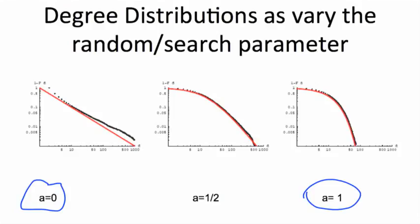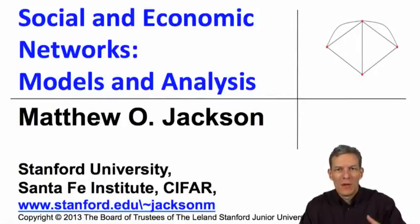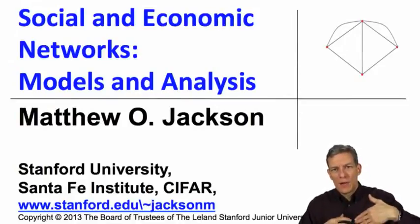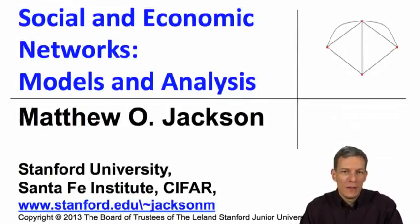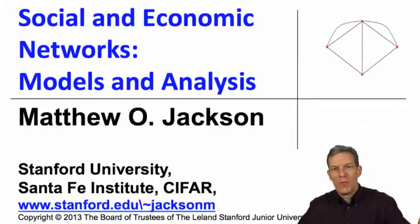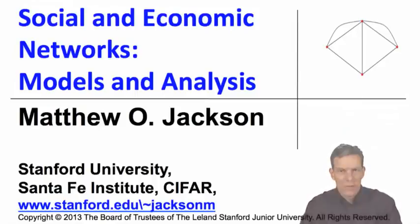So we've solved for a degree distribution, and what we can do next is we've got a degree distribution, a hybrid distribution that spans between these different extremes. We can start taking this to data and begin to back out what that a is in the data—how many links look like they're being formed more at random, how many look like they're being formed through the network search process, meeting friends of friends—and then see whether we see differences in different data sets.